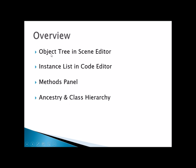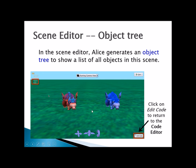We're going to review the object tree, what an instance is, and go through the methods panel. We're not going to be talking about ancestry and class hierarchy today. The scene editor will show you the objects over here in the object tree and it lists everything that's there. We're always going to have the ground and the camera.